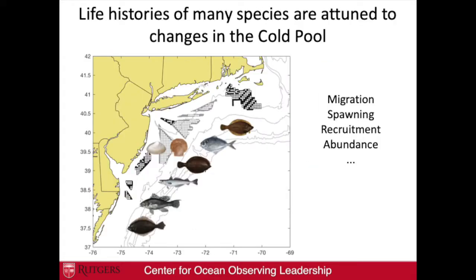Life history is attuned to the cold pool. These are seasonal changes, but also long-term changes that we've been seeing for a while. Some examples of species I'll talk about today — Daphne will cover some of the shellfish, and I'll talk about important fin fish that have relationships with the cold pool. Life history traits like the timing of migration, spawning, recruitment, and abundance can all be related to cold pool processes.